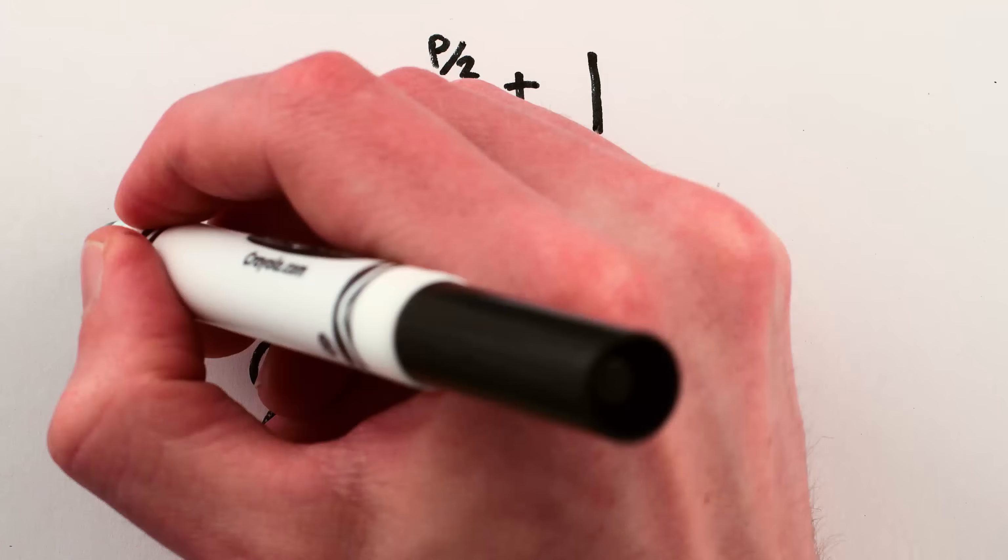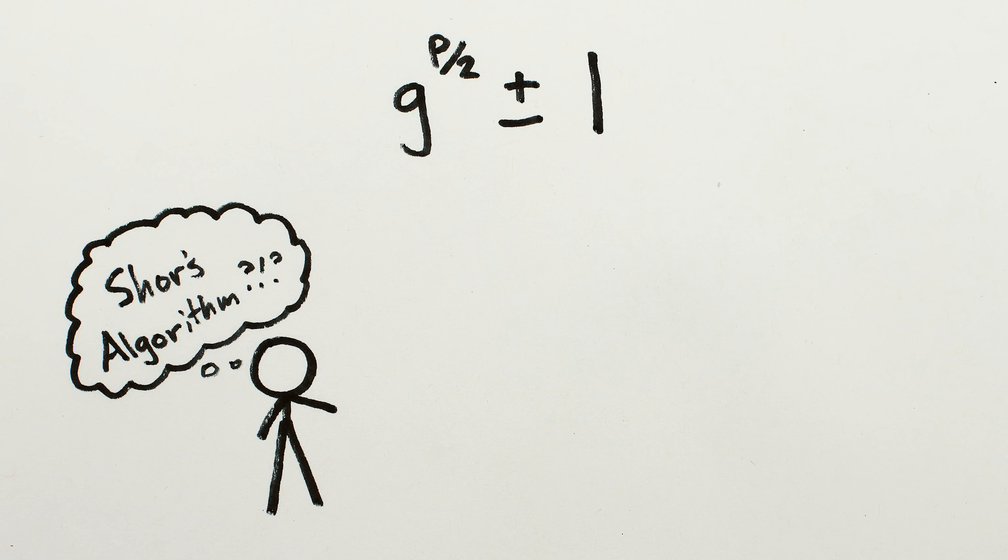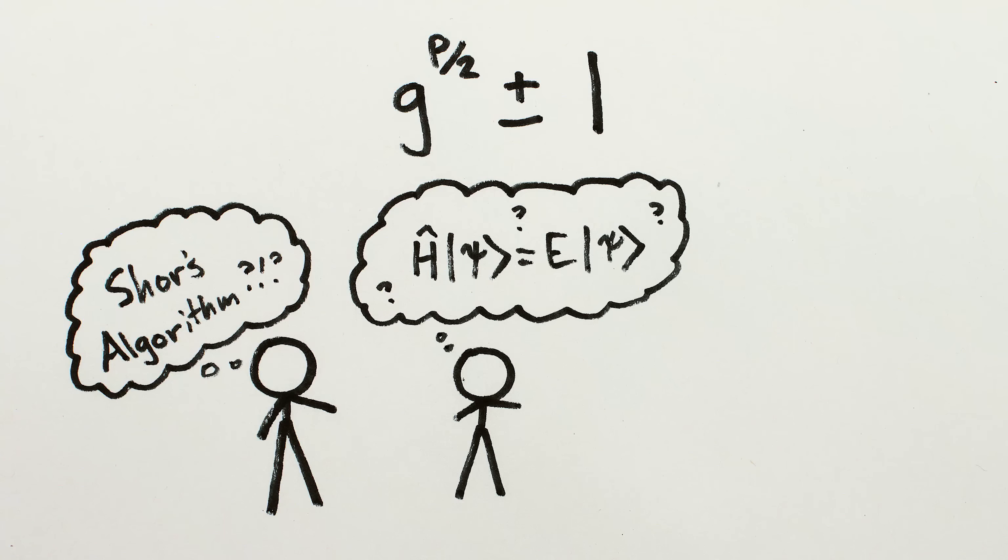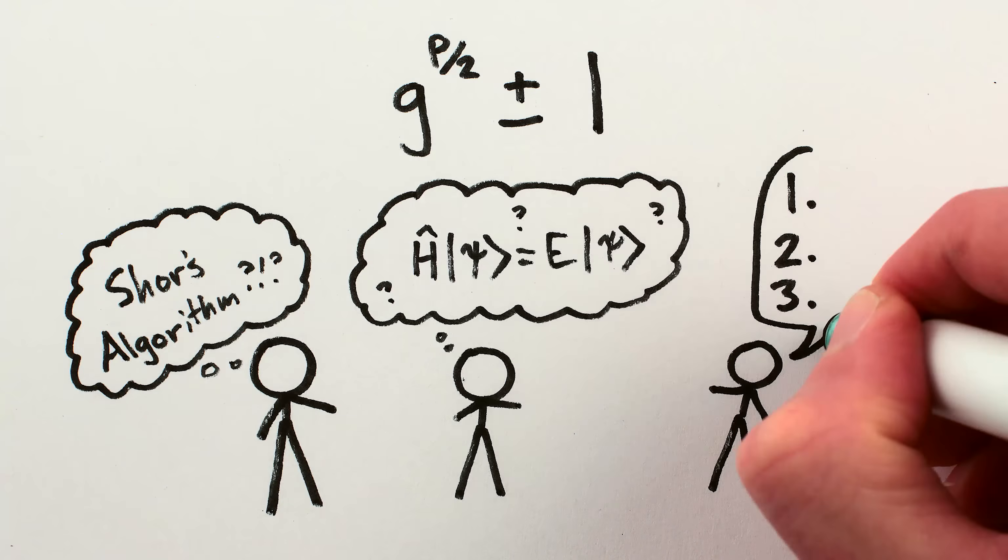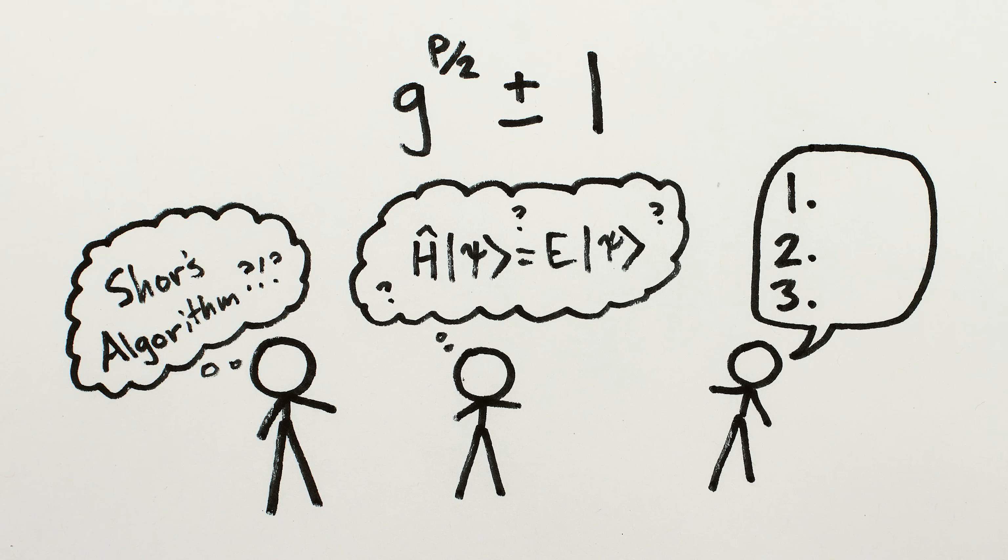So, is this all Shor's algorithm is? Why can't we use this to break encryption right now? Where's the quantum mechanics? Well, indeed, there are three problems with these new and improved guesses.